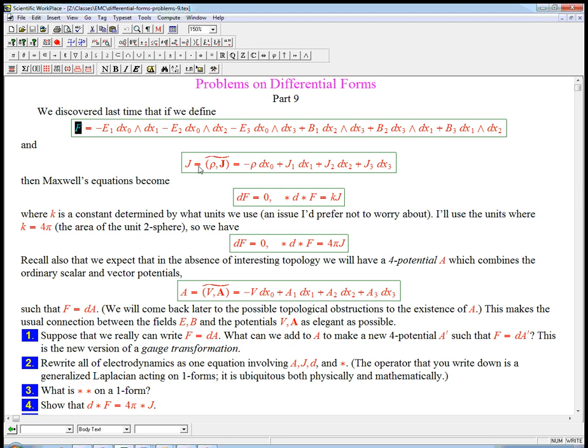So if we define F to be the combination of the E's and B's, and J to be the combination of rho and the usual J's, then Maxwell's equations become incredibly simple. F is a closed two-form, dF equals zero. And when we do star D star on F, which is basically the generalization of the divergence, then we get some constant times J. This says that if you look at the source of the fields, the reason you see divergence of E and B put together in this way is that you've got some sort of source around the rho and the J.